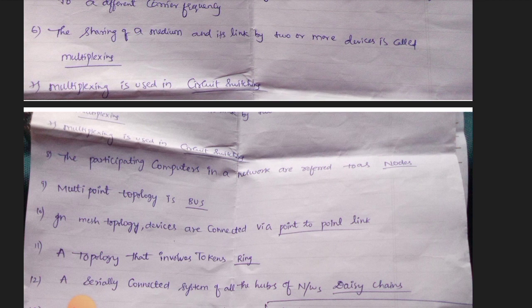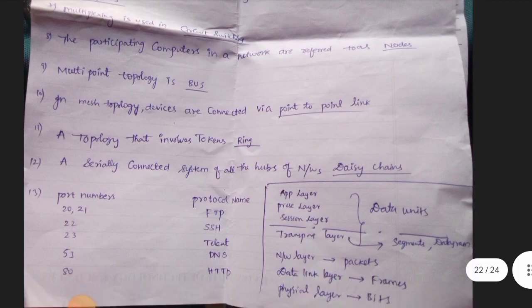The participating computers in a network are referred to as nodes. Multipoint topology is first. In mesh topology, devices are connected via point-to-point links. A topology that involves tokens is nothing but ring topology. A serially connected system of all the hubs of networks is nothing but daisy chains.